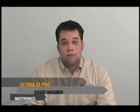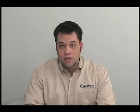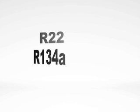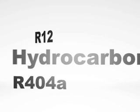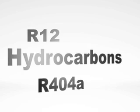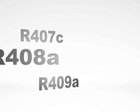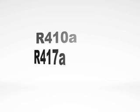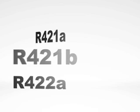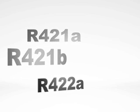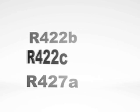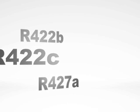The Ultima ID Pro can currently identify over 15 refrigerants. The list of refrigerants includes R22, R134A, R12, hydrocarbons, R404A, R407C, R408A, R409A, R410A, R417A, R421A and B, R422A, B and C, and R427A.